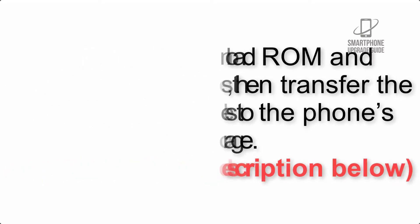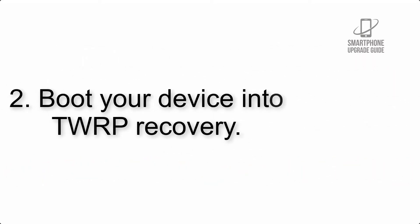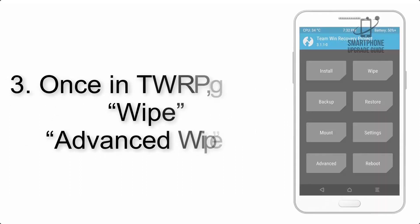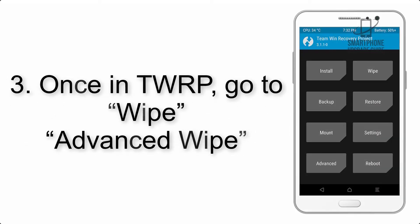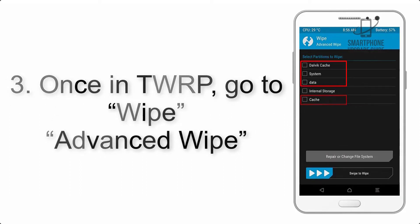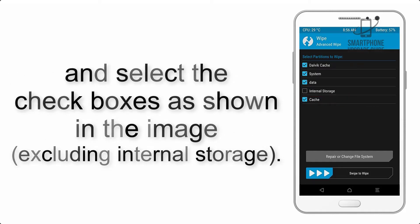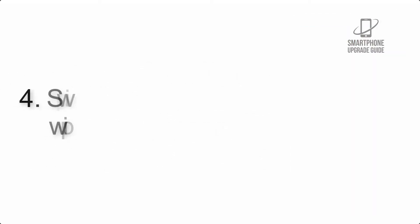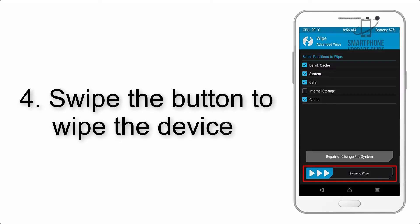Step 2: Boot your device into TWRP recovery. Once in TWRP, click on Wipe, then Advanced Wipe, and select the checkboxes as shown in the image, excluding internal storage. Step 4: Swipe the button to wipe the device.